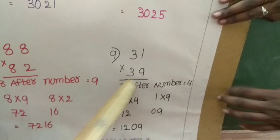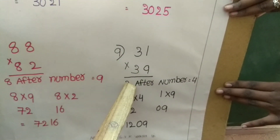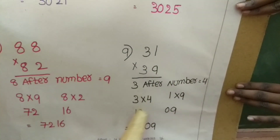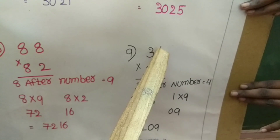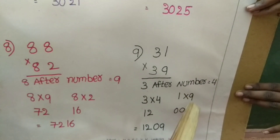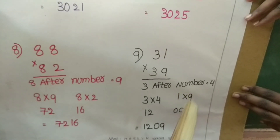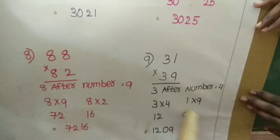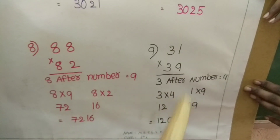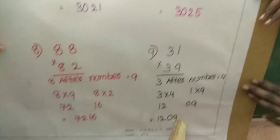Another example: 31 into 39. The tens digit 3, the next number is 4. 3 into 4 is equal to 12. Units digit multiplication: 1 into 9 is equal to 9. Since 9 is a single digit, we write it as 09. 31 into 39 is equal to 1209.